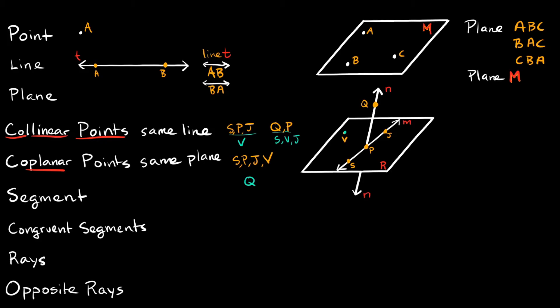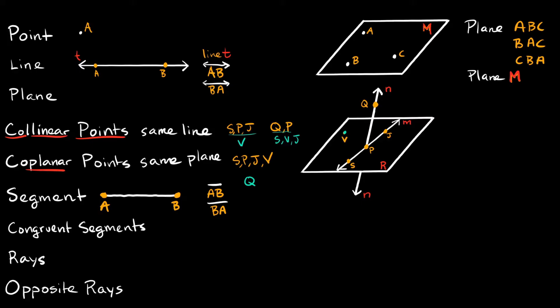Now let's move on to segments. A segment is basically the same thing as a line, except it ends. So a segment would look like this with points A and B — this is a line segment. Just like we have specific ways we can write lines, we have specific ways we can write line segments. This one would be segment AB with just a straight line over it — no arrows. And again, you can flip this, so you could write it as segment BA.